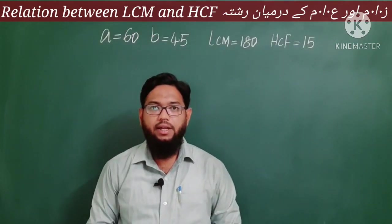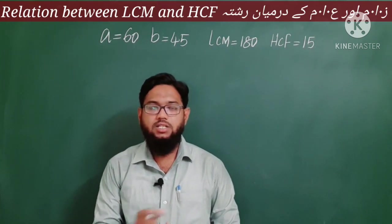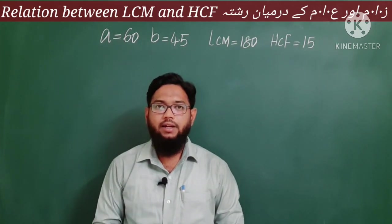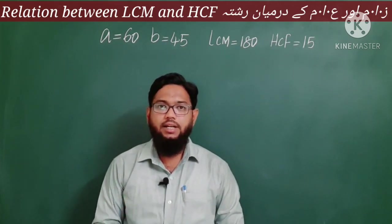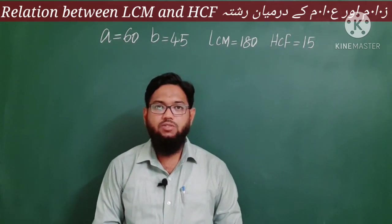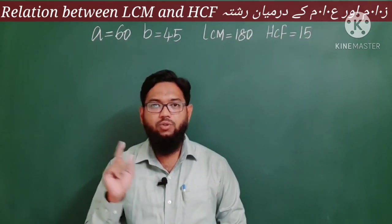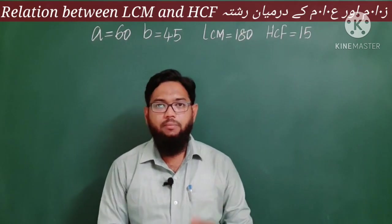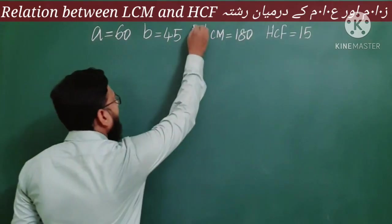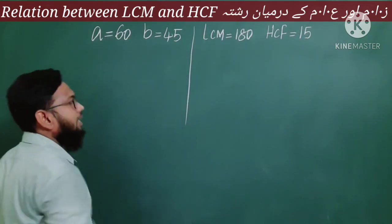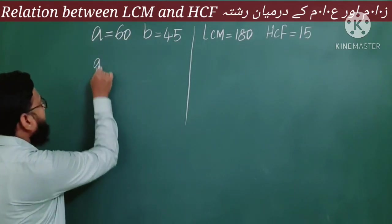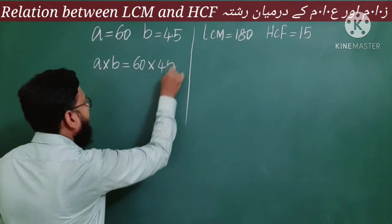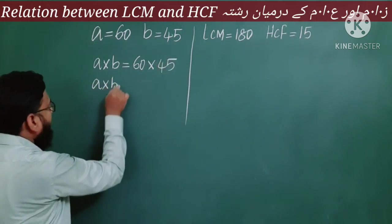After finding LCM and HCF of 60 and 45, I have written on the board: A = 60 (the first number), B = 45 (the second number), LCM = 180, and HCF = 15. Now we split into two parts. On one side, I multiply the two given numbers A and B. So A × B = 60 × 45.